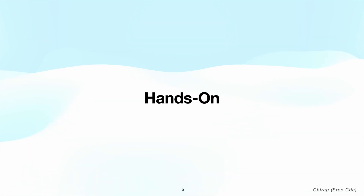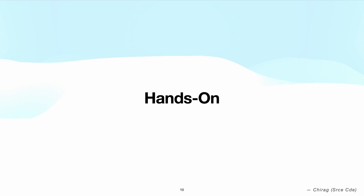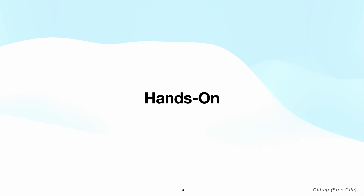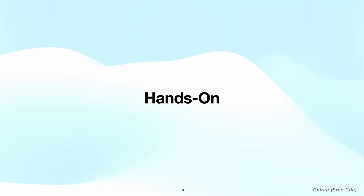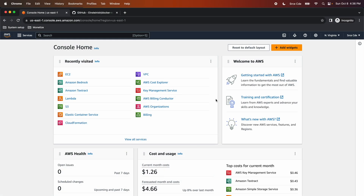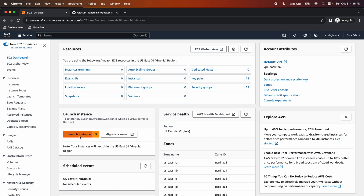Now it's time for a quick hands-on. We will launch an EC2 instance with hibernation enabled beforehand, because you cannot enable hibernation after launching an instance. We will then run the Nginx server using a Docker image to test the hibernation functionality. Let's jump to the AWS management console and navigate to the EC2 management console and click on launch instance.